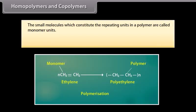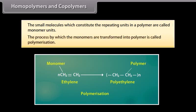The small molecules which constitute the repeating units in a polymer are called monomer units. The process by which the monomers are transformed into polymer is called polymerization. For example, polyethylene is a polymer which is obtained by the polymerization of ethylene. The ethylene molecules are referred to as monomer units.